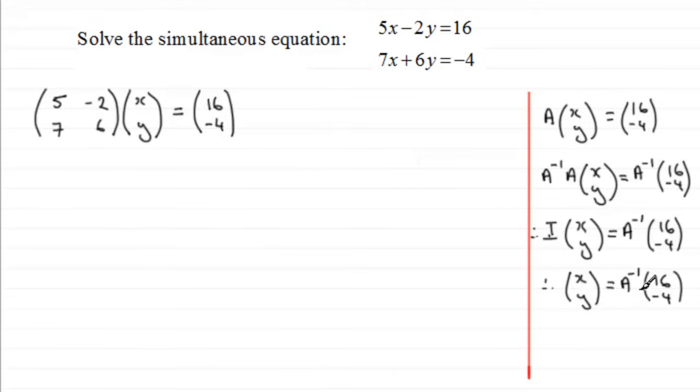So assuming that I'm familiar with this, if I was answering this question, I would want to work out first of all what the inverse of this matrix is. So I'm going to call it A. So I'd say let A be that matrix. A equals the matrix (5, -2; 7, 6).